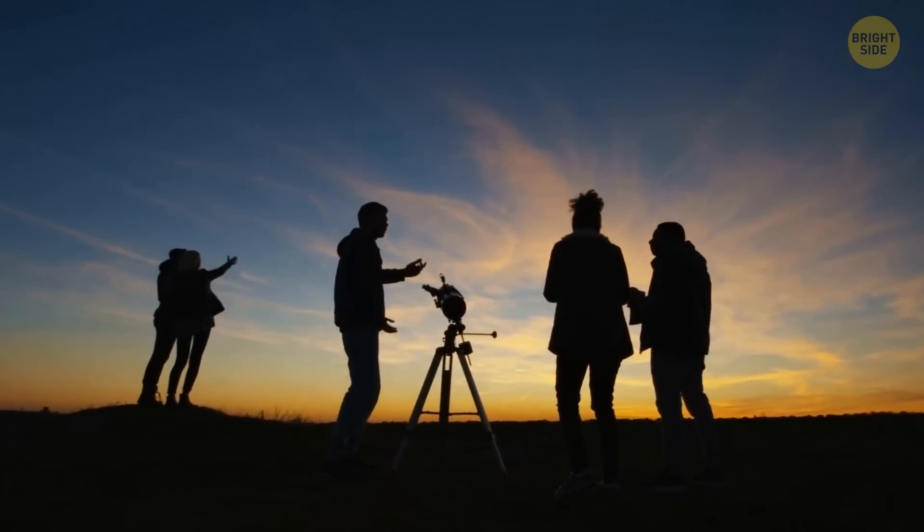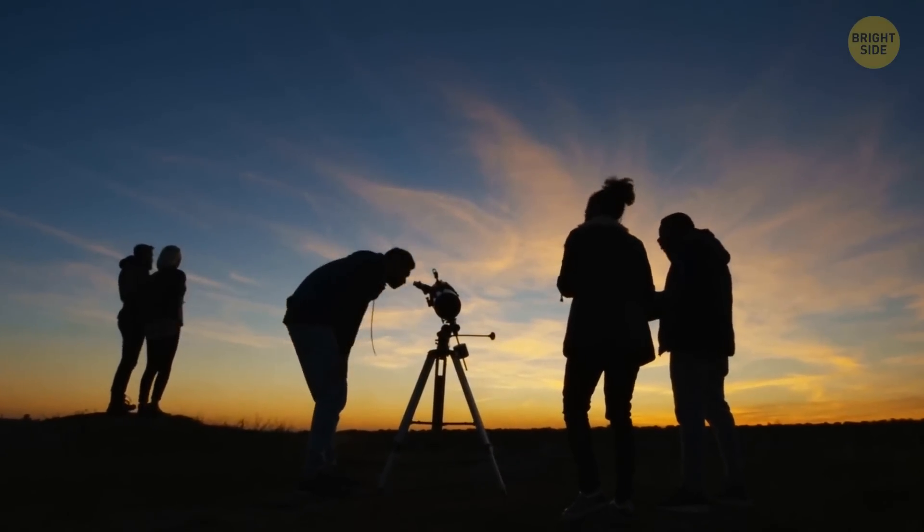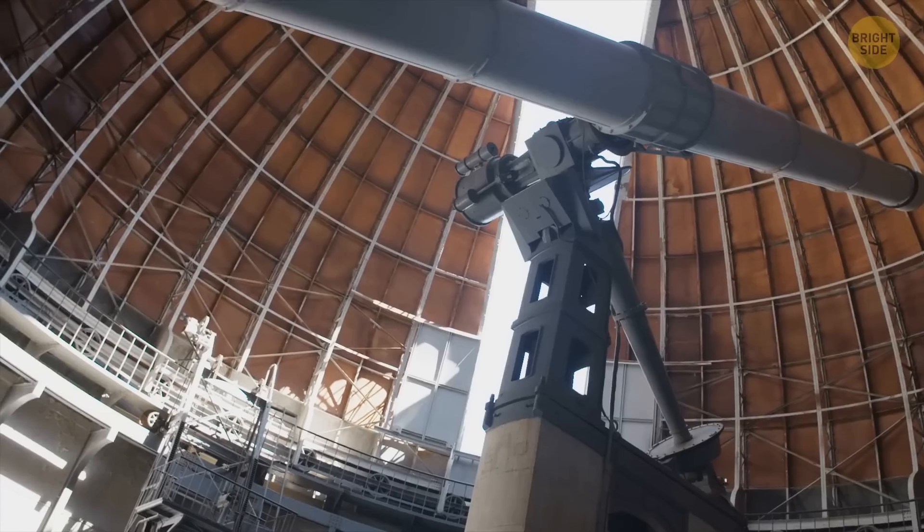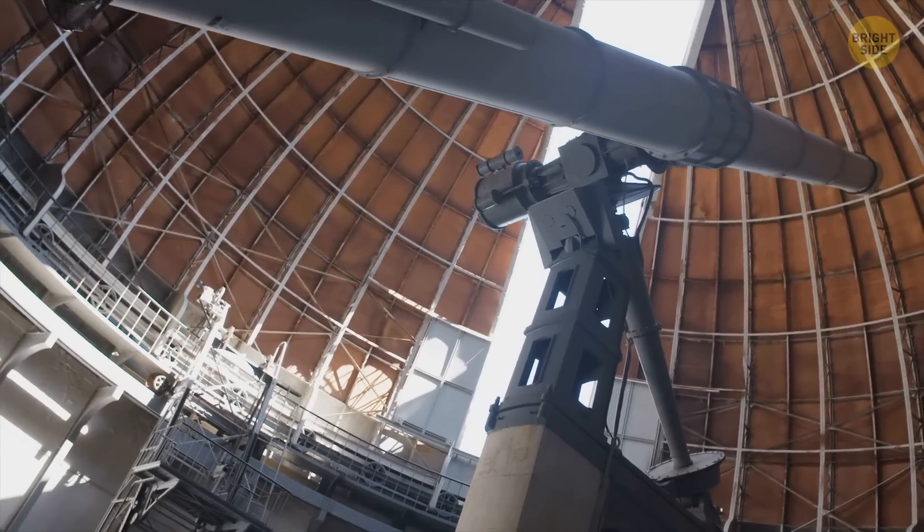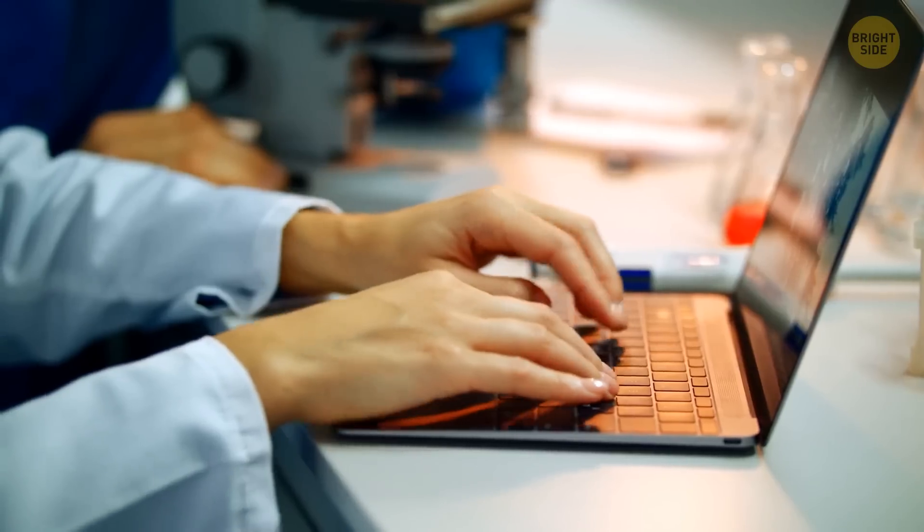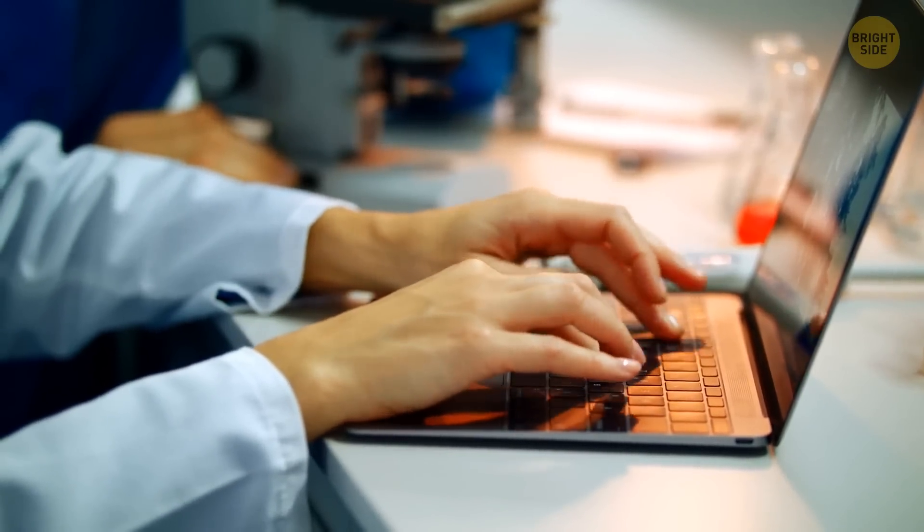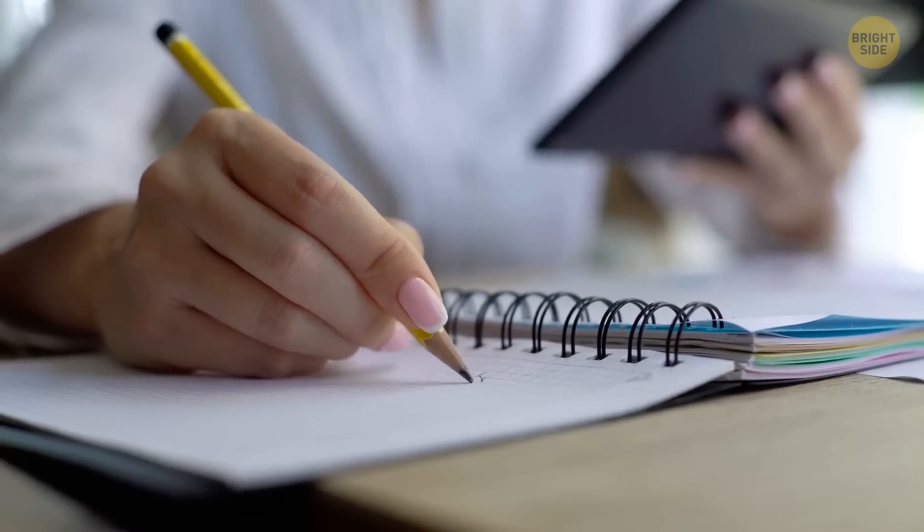People have been watching the moving vortex on Jupiter for more than 150 years. Some time ago, astronomers predicted that it would gradually slow down and become smaller or disappear altogether. But that turned out not to be the case.